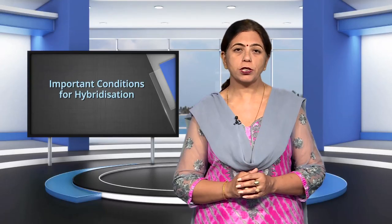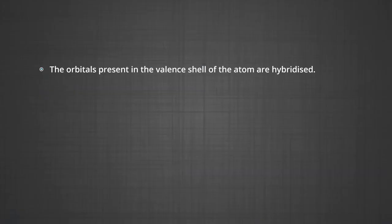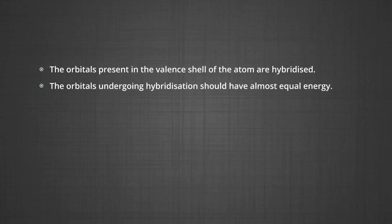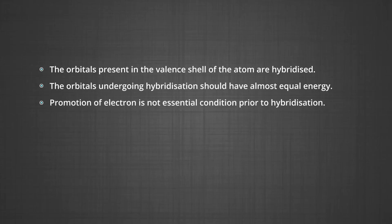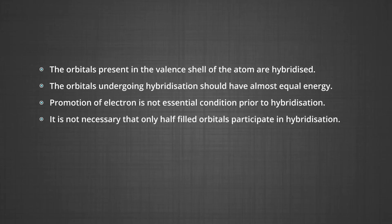Important conditions for hybridization: the orbitals present in the valence shell of the atom are hybridized. The orbitals undergoing hybridization should have almost equal energy. Promotion of electrons is not an essential condition prior to hybridization. It is not necessary that only half-filled orbitals participate in hybridization. In some cases, even filled orbitals of the valence shell take part in hybridization.